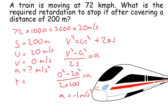A train is moving at 72 kilometers per hour. What is the required retardation to stop it after covering a distance of 200 meters?